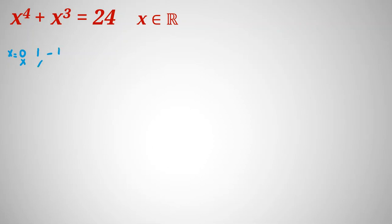If we check x equal to negative 1, the left hand side equals 0, so both 1 and negative 1 are not solutions. If we check x equal to 2, then 2 to the 4 plus 2 cubed equals 16 plus 8 which equals 24. So x equal to 2 is one answer, and it helps us factorize this equation.